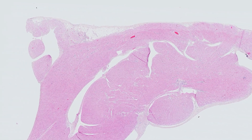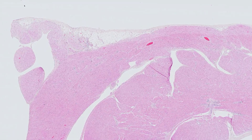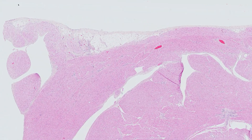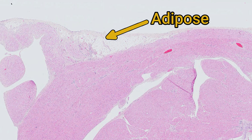Differentiating between the two is quite straightforward, since the epicardium contains adipose tissue and other connective tissue structures.